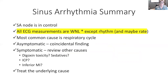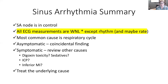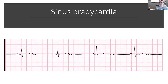That is the end of our sinus arrhythmia summary. For respiratory sinus arrhythmia: the SA node is still in control of this rhythm; all ECG measurements will be within normal limits except the rhythm; the most common cause is the respiratory cycle. If asymptomatic, consider it a coincidental finding and just note it. If symptomatic, review the cause — whether it's digoxin, morphine, a brain issue, or a cardiac issue — and treat the underlying cause. In our next section, we're going to be going into sinus bradycardia.